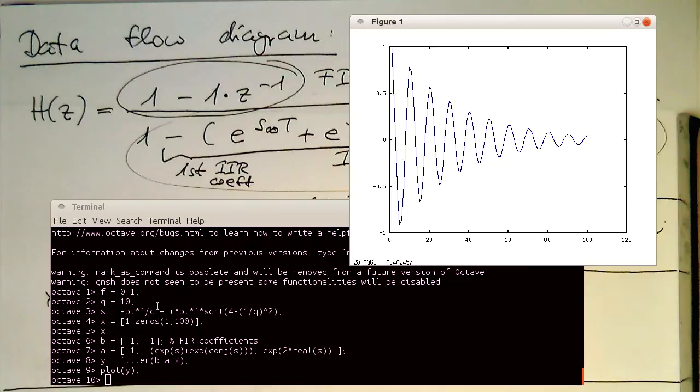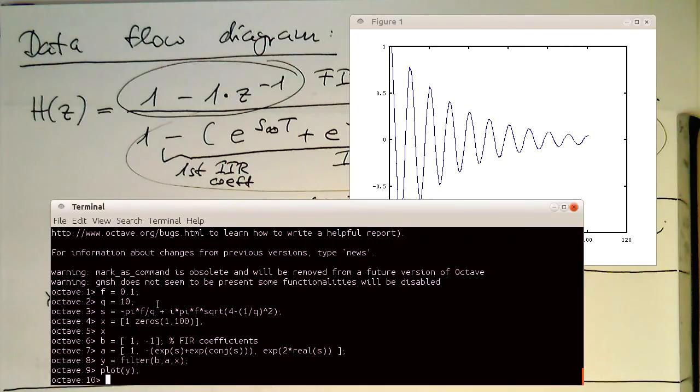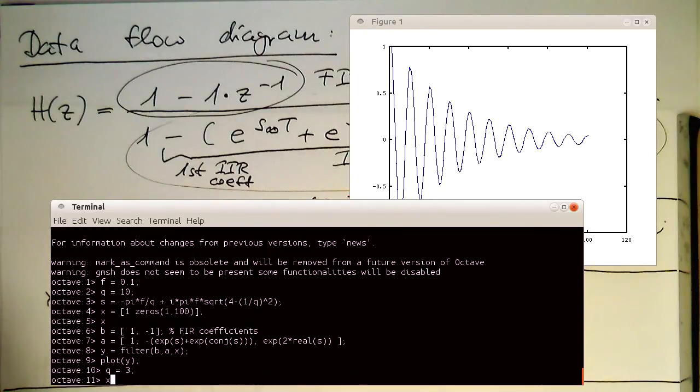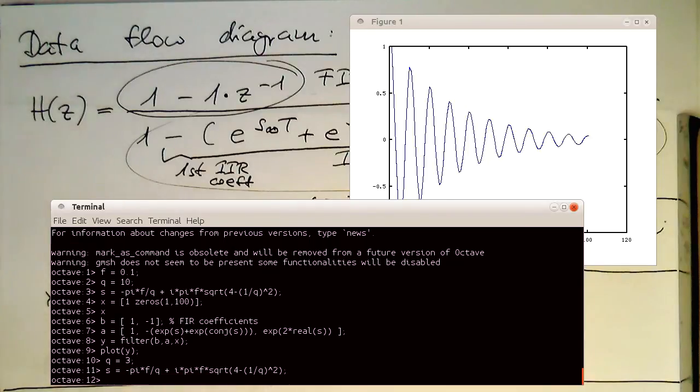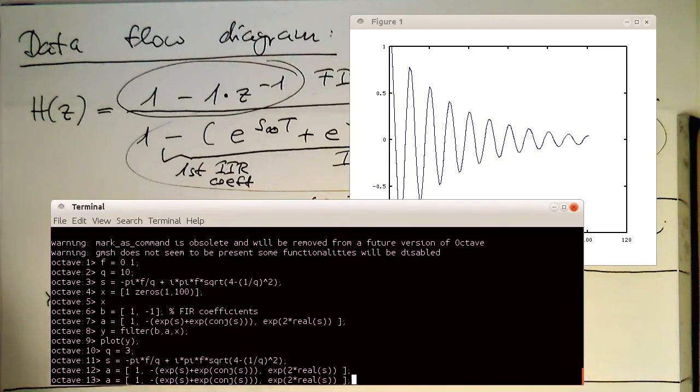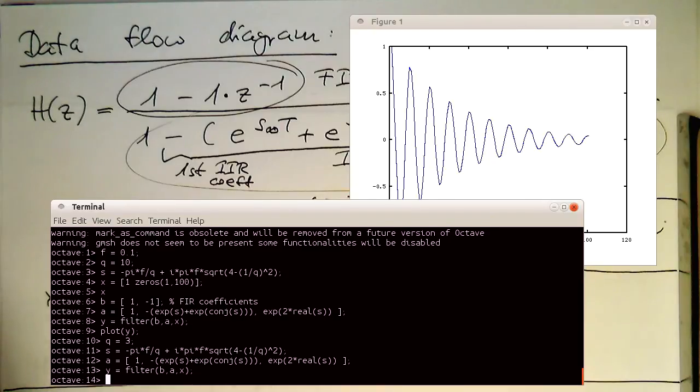So if I change this Q factor here, then this oscillation will run shorter or longer. So for example, if I set this Q factor to 3 and the Q factor goes into our S. So we're getting a new S. Then we need to create new IIR coefficients and run the filter command on them and plot this.